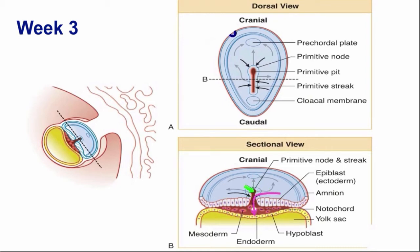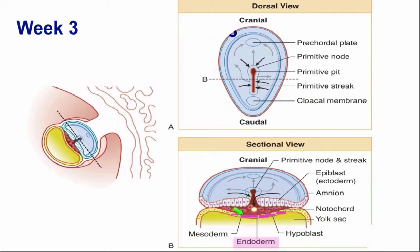Some of those cells will migrate through the primitive streak all the way to where the hypoblast cells are — they will invade the hypoblast. More and more epiblast cells will invade the hypoblast; as they do, they push the hypoblast cells out of the way. Those hypoblast cells get displaced and eventually die. Eventually, all of the hypoblast cells will be replaced by these epiblast cells now living in that layer. Those epiblast cells that are now living where the hypoblast cells used to live we're going to call endoderm.